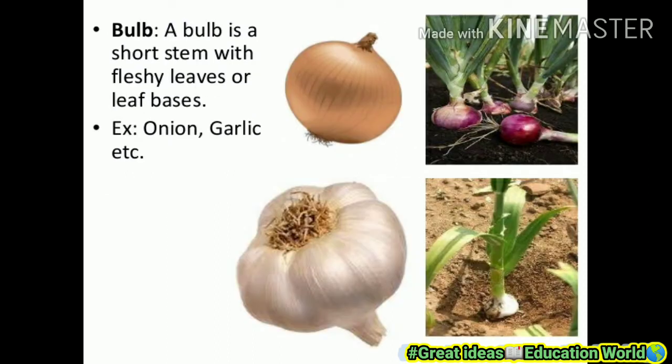Next is bulb. A bulb is a short stem with fleshy leaf bases. Examples: onion and garlic.